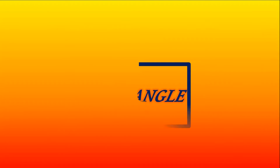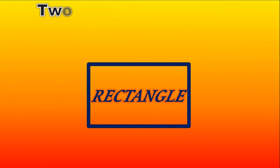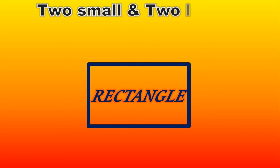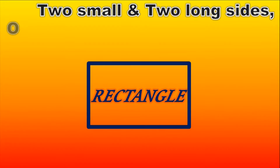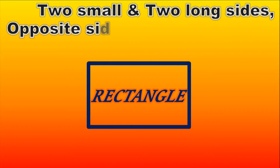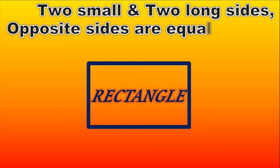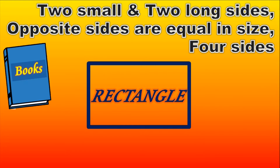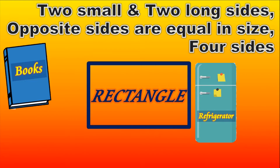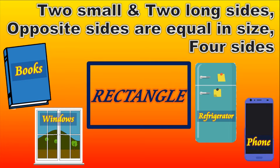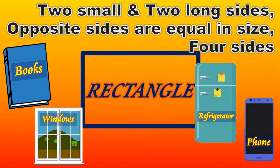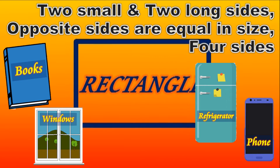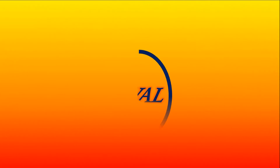Rectangle. Our rectangle has two small sides and two long sides. Opposite sides are equal in size — four sides total. Books, refrigerator, window, phone — are rectangle in shape.